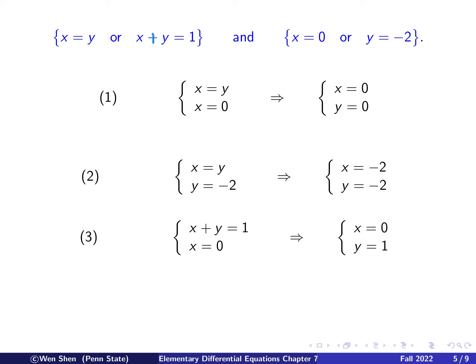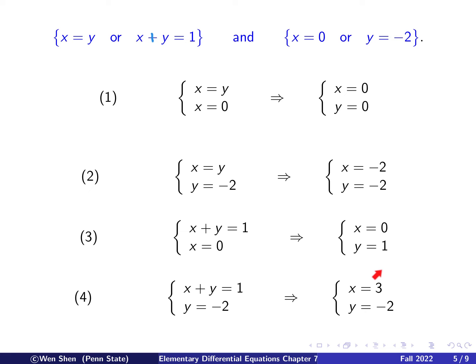The third critical point comes from combining x plus y equals one with x equals zero: then x is zero and y equals one, giving (0, 1). The last combination uses x plus y equals one with y equals negative two: putting y equals negative two into the first equation gives x equals three, so (3, −2) is the fourth critical point. So we have four critical points, and in this example each combination gives exactly one critical point — though that is not a general rule.